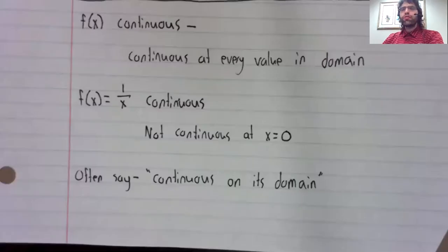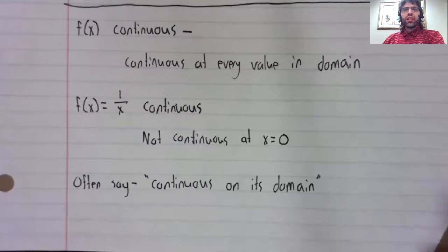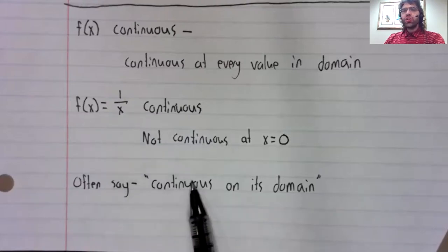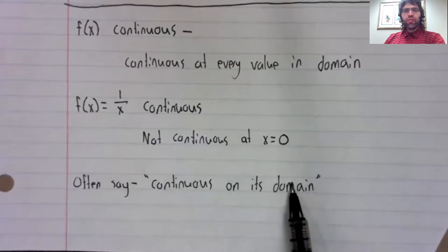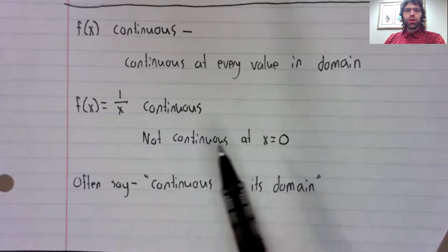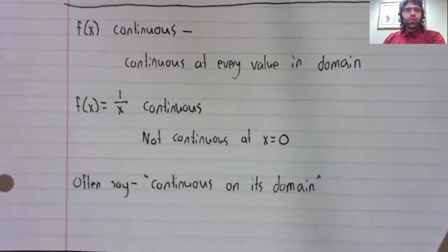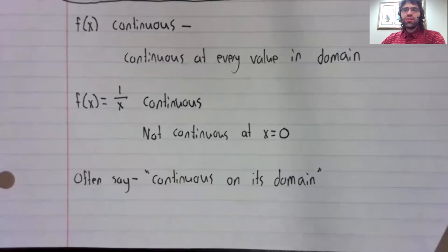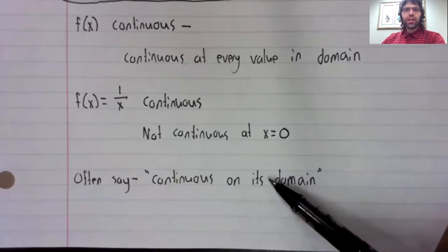So frequently, instead of saying that functions are continuous, we say that a function is continuous on its domain. This drives home the fact that the function is continuous where it's defined. But if a number isn't in its domain, for example, zero here, of course it's not continuous there. It's only continuous on its domain.